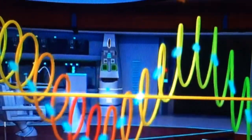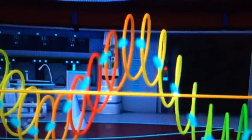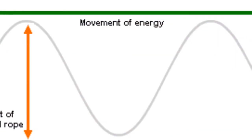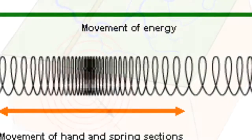A transverse wave is when the particles in a medium move back and forth at right angles to the direction the wave travels, and a longitudinal wave is when matter moves back and forth in the medium along the same direction the wave travels. And a mechanical wave is a wave that can travel only through matter.